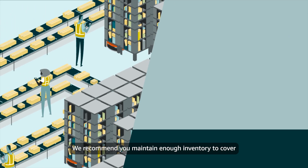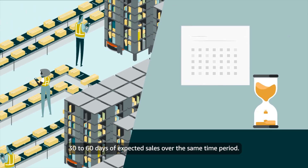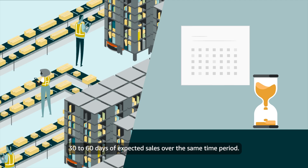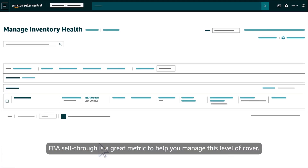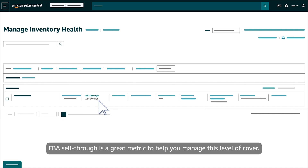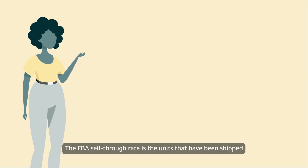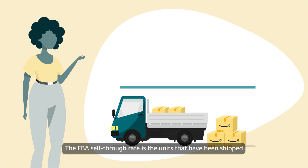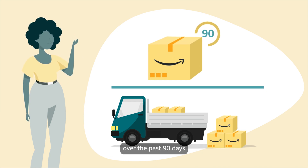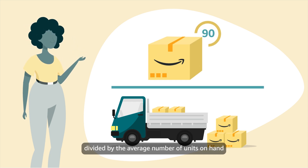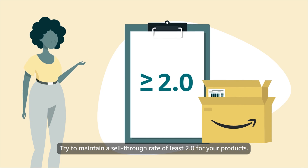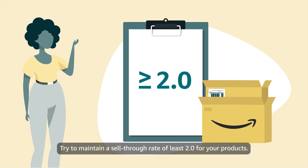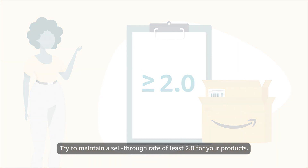We recommend you maintain enough inventory to cover 30 to 60 days of expected sales over the same time period. FBA sell-through is a great metric to help you manage this level of cover. The FBA sell-through rate is the units that have been shipped over the past 90 days divided by the average number of units on hand in our fulfillment centers during that same period. Try to maintain a sell-through rate of at least 2.0 for your products.